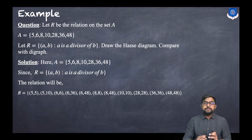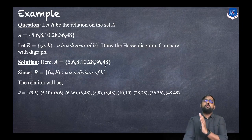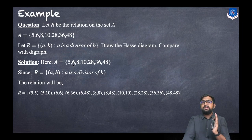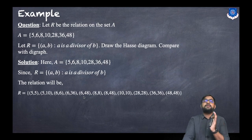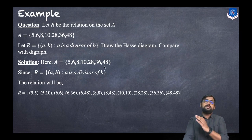First we write the relation. Since this is the divides relation, all numbers divide themselves, so pairs (5,5), (6,6), (8,8), (10,10) up to (48,48) are included. Then: 5 divides 10, so (5,10); 6 divides 36 and 48, so (6,36) and (6,48); 8 divides 48, so (8,48). The numbers 10, 28, 36, and 48 only divide themselves.